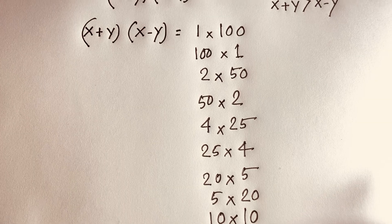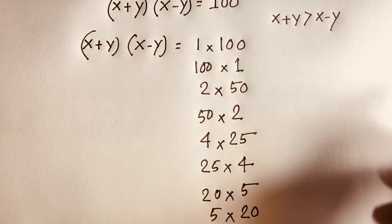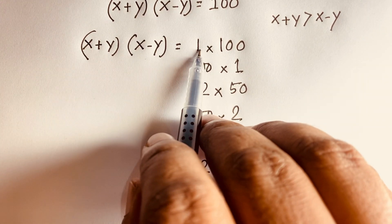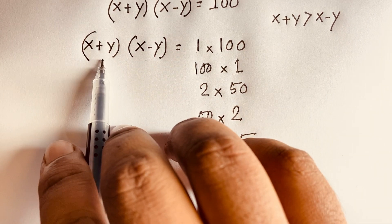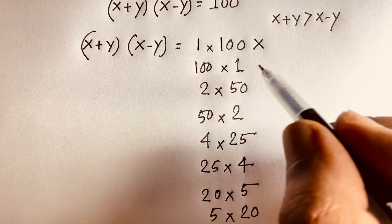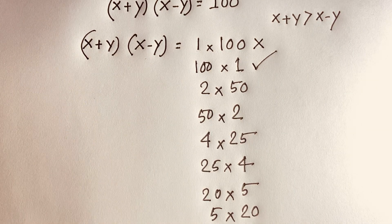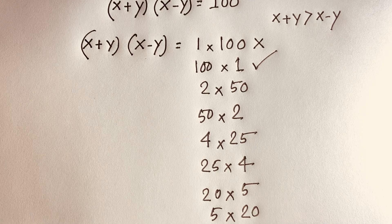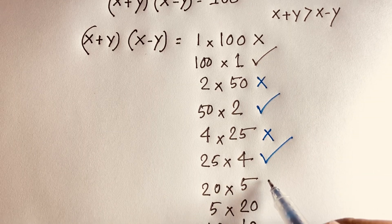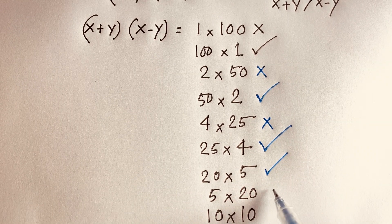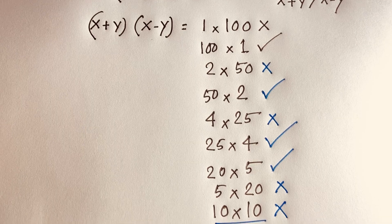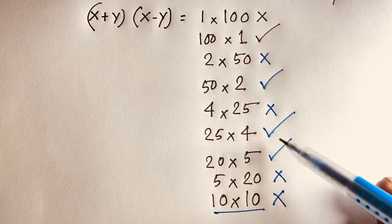We know that x plus y is always greater than x minus y. So for each factor pair, the larger factor corresponds to x plus y and the smaller to x minus y. The pair 1 times 100 is rejected because that would make x plus y equal to 1 and x minus y equal to 100, which violates our condition. The pair 10 times 10 is also rejected because both factors are equal. This leaves us with 4 valid cases.